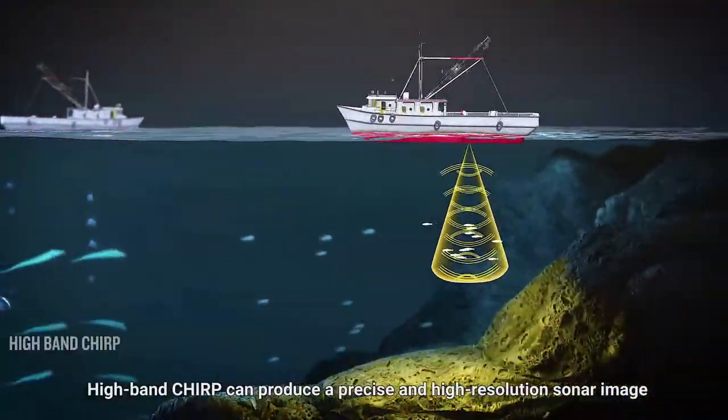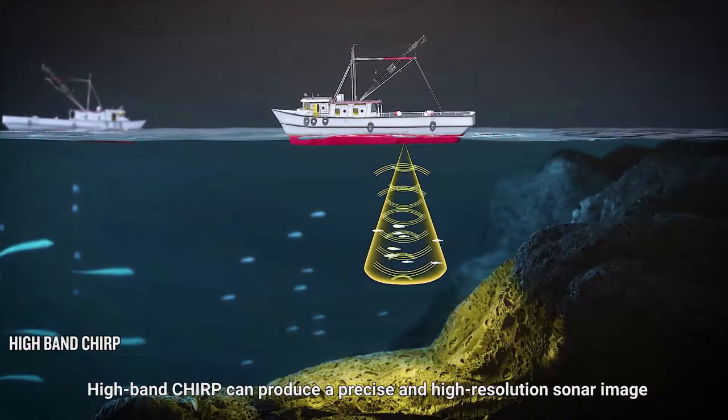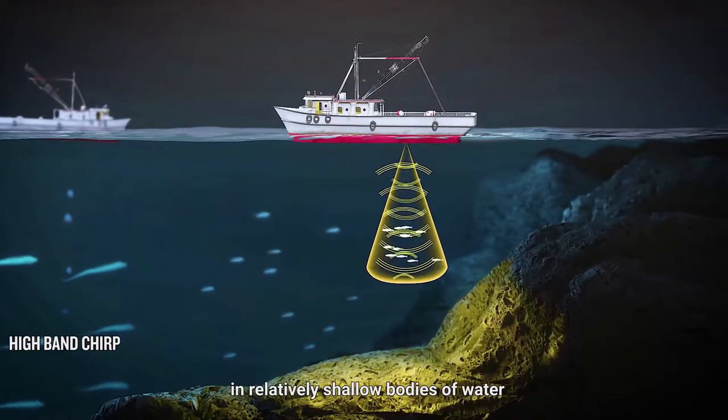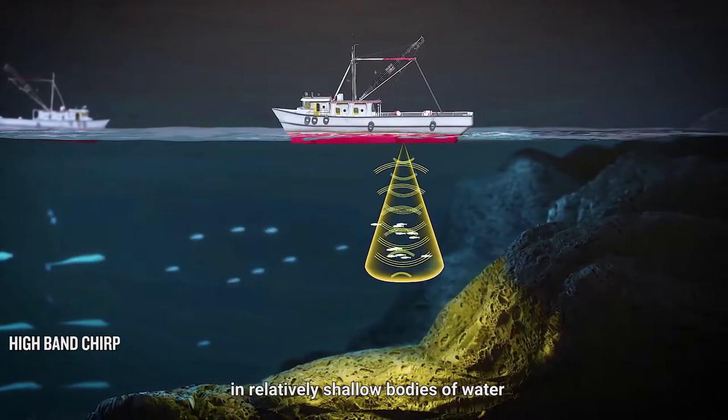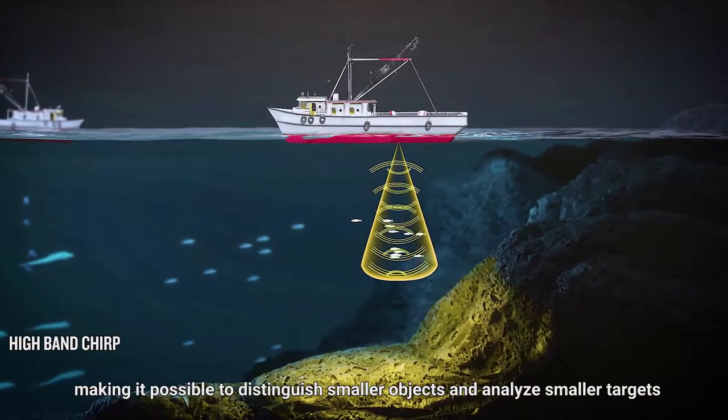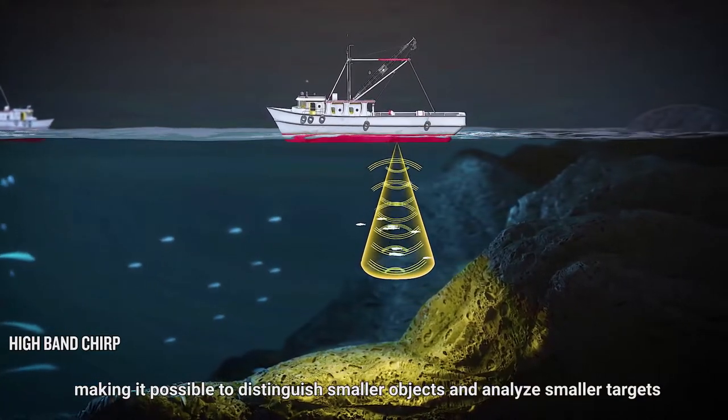High-band Chirp can produce a precise and high-resolution sonar image in relatively shallow bodies of water, making it possible to distinguish smaller objects and analyze smaller targets.